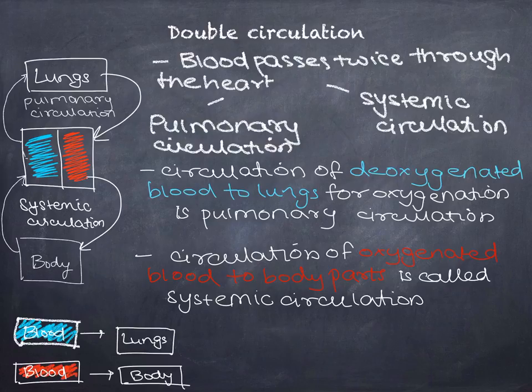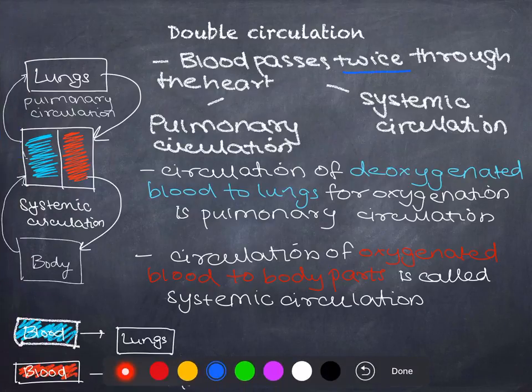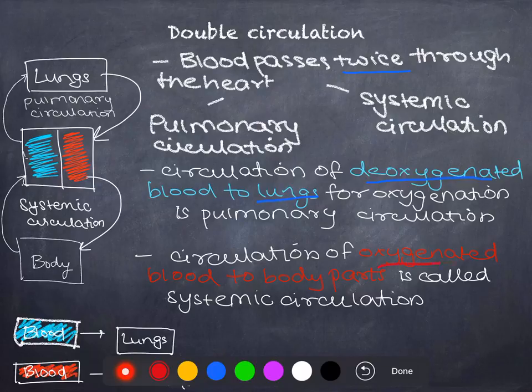It is called double circulation because blood passes twice through the heart. There are two types of circulation in double circulation: pulmonary circulation and systemic circulation. Pulmonary circulation occurs when deoxygenated blood has to be transported to the lungs for oxygenation. Systemic circulation occurs when blood is pumped to the organs of the body — pumped to the system — which is why it is called systemic circulation. Systemic circulation is the circulation of oxygenated blood to the other parts of the body.